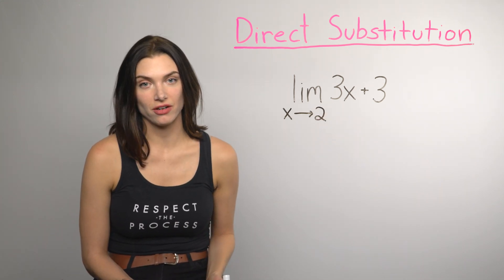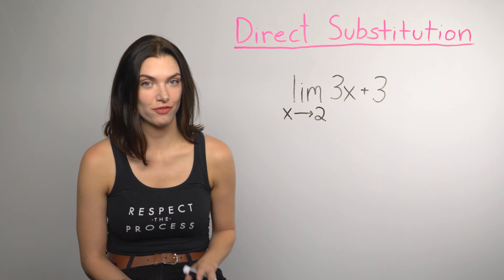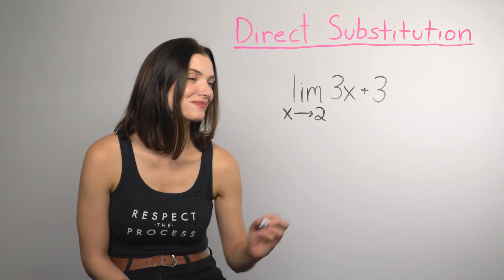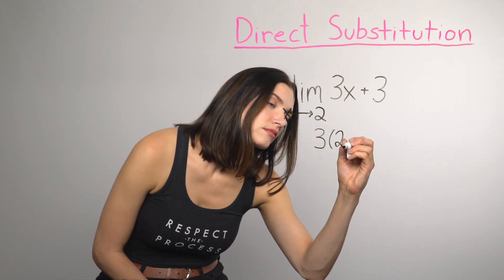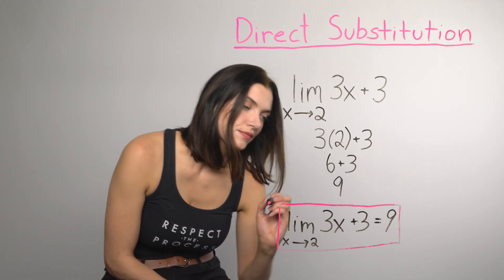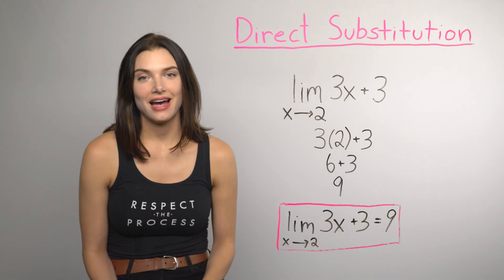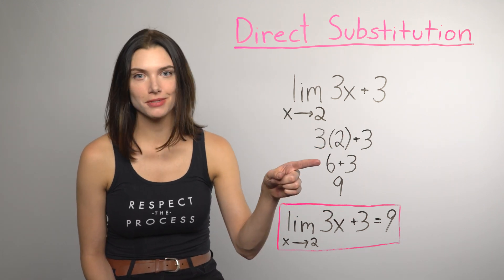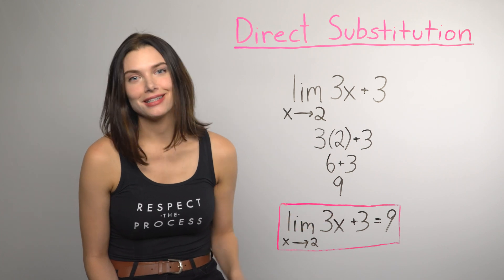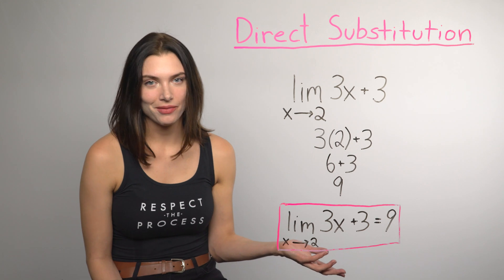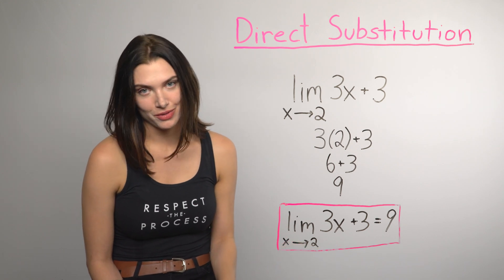So we're trying to find the limit of the function as x approaches 2. First, try substituting in the 2 for x in the function. After we plug 2 in, it's just a matter of simplifying. Multiply and combine the like terms and we're done. The limit as x approaches 2 of this function is 9. It's great when this happens but obviously it doesn't always work this way. Sometimes something like this happens.